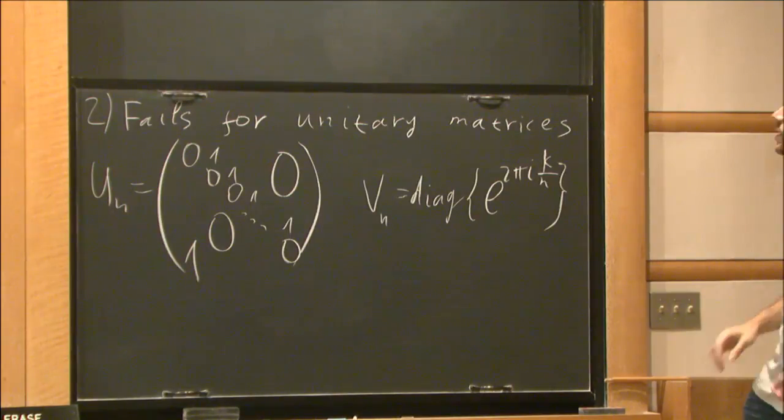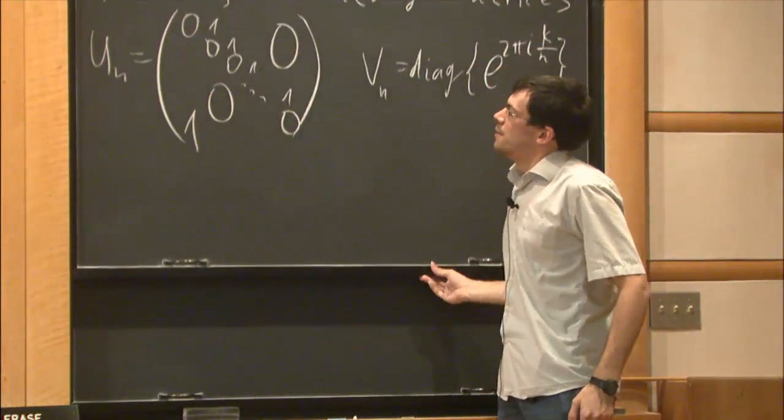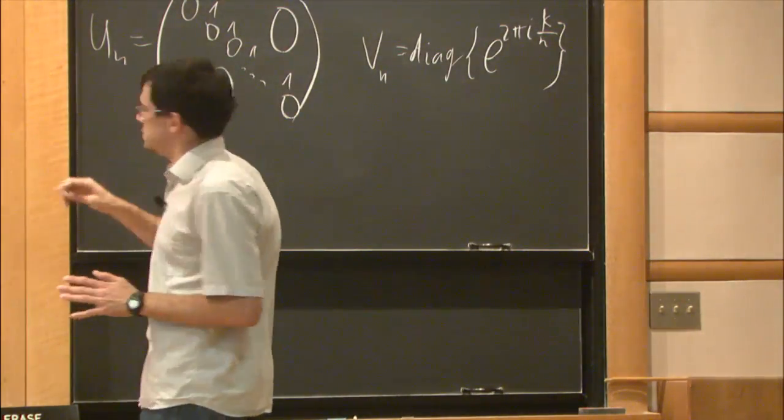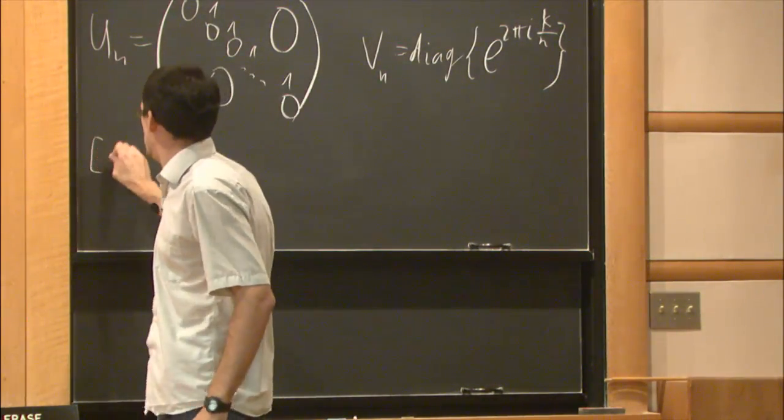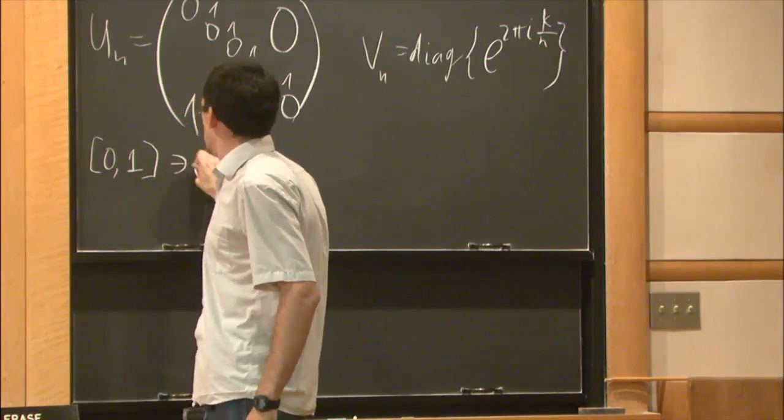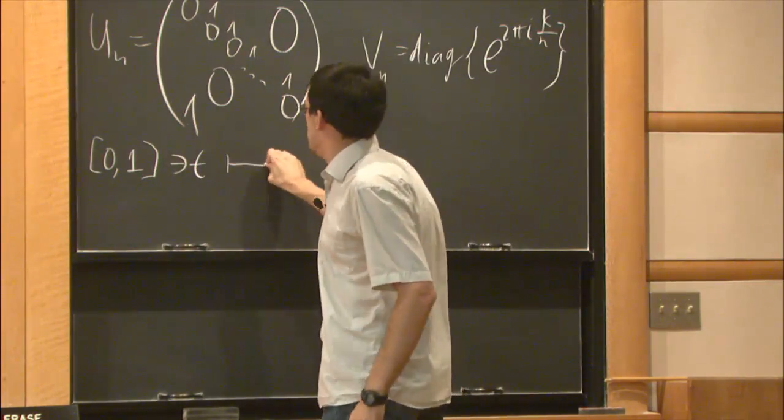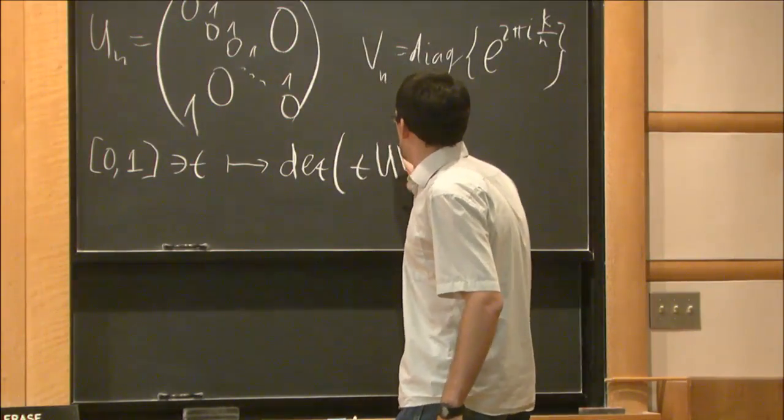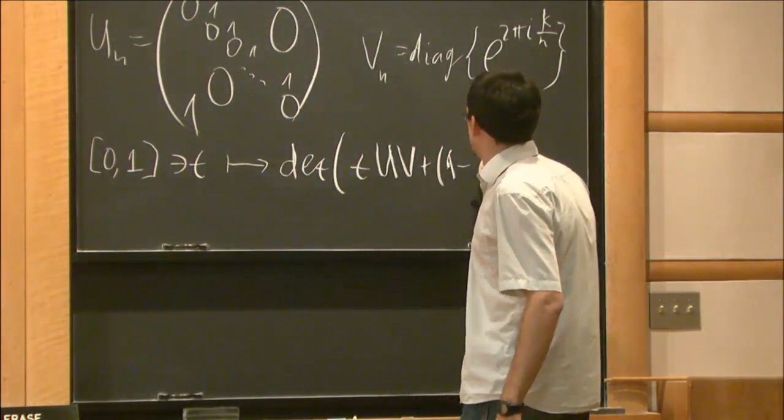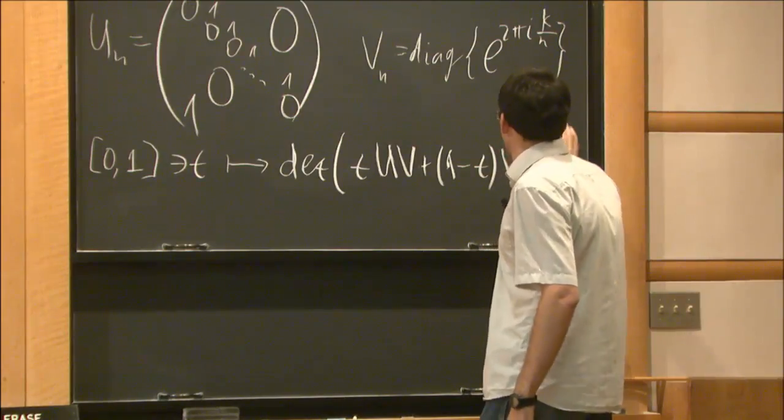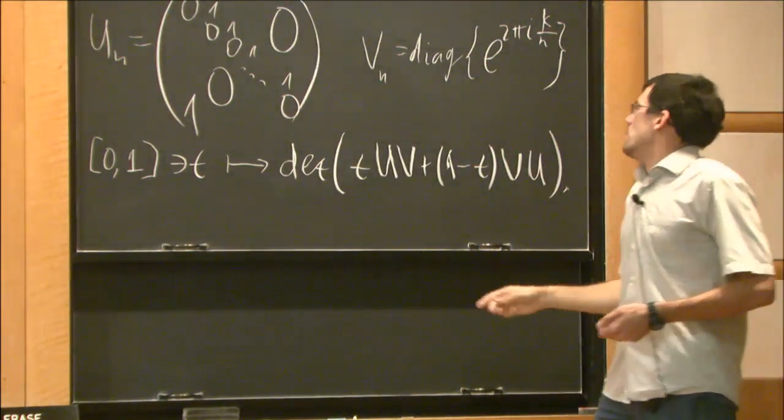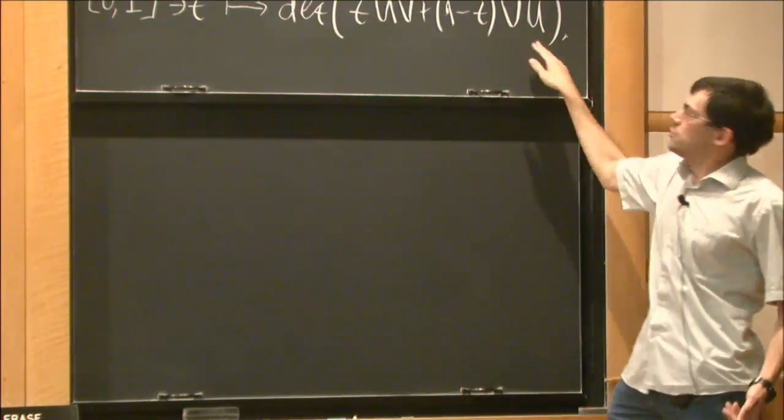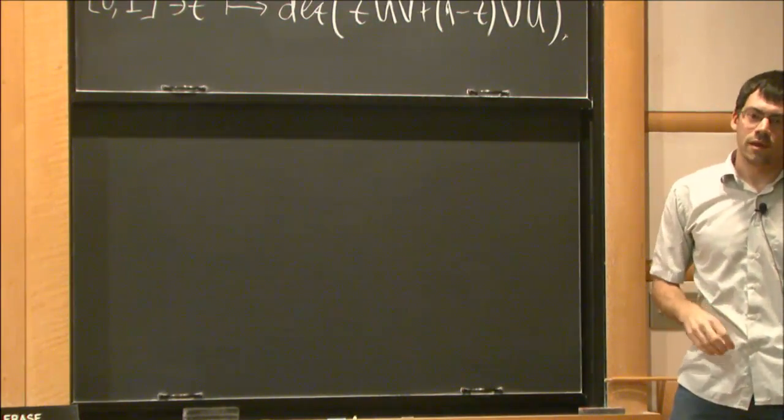Again it's easy to check that the commutator of these matrices is of order 1/n, but they are not close to commuting ones and the obstruction can also be written down. You need to consider the following curve: t maps to the determinant of t·uv + (1-t)·vu. This is a closed curve because determinant of uv equals determinant of vu.